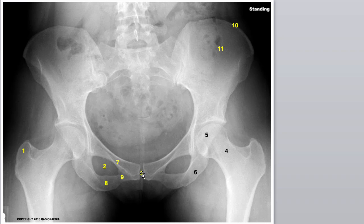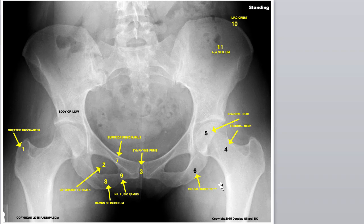Number three — pubic symphysis, or symphysis pubis. Number four — the neck, we already did that. You can see something else here — look at this where the little arrow is. I didn't mark it, but the pubic tubercle is right there. There are a few other things, but that's good enough. We've also got to point out this region here — that's the body of the ilium. And the ala of the ilium we already did.